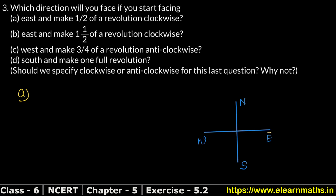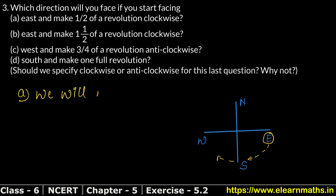We are looking at east and making a clockwise move, which means moving in this direction. Half revolution — as we saw in the last question, half revolution means 2 right angles of movement. There are four right angles in a full revolution, so half is 2 right angles. Moving clockwise 2 right angles from east, we will reach the west side.